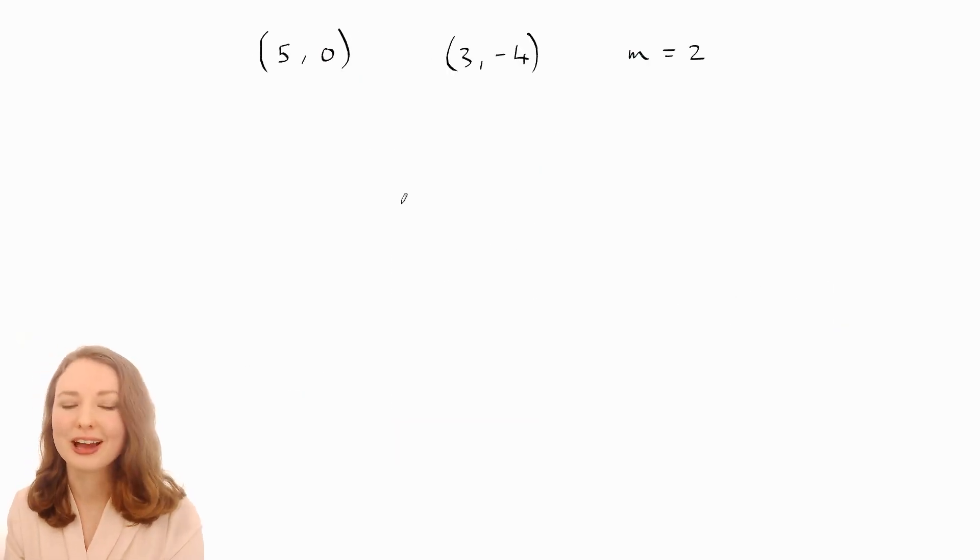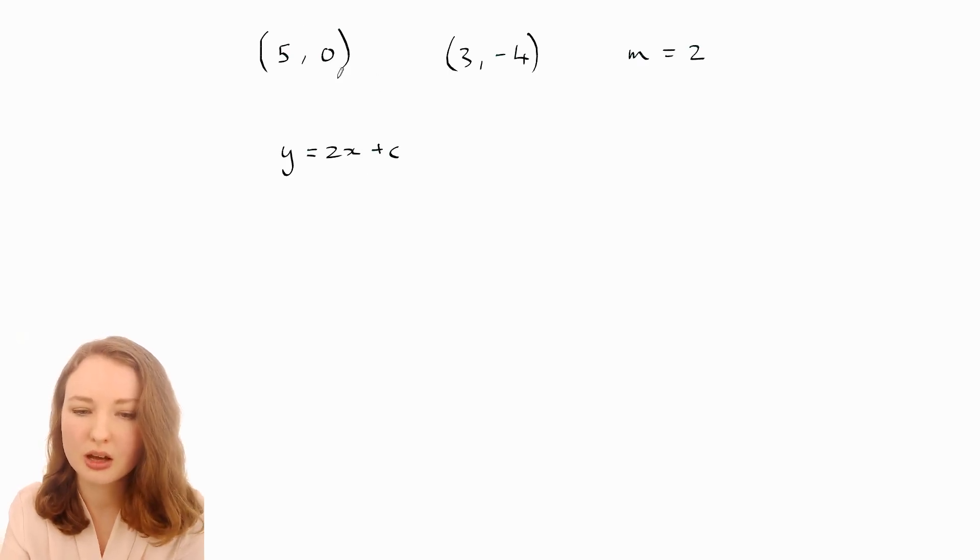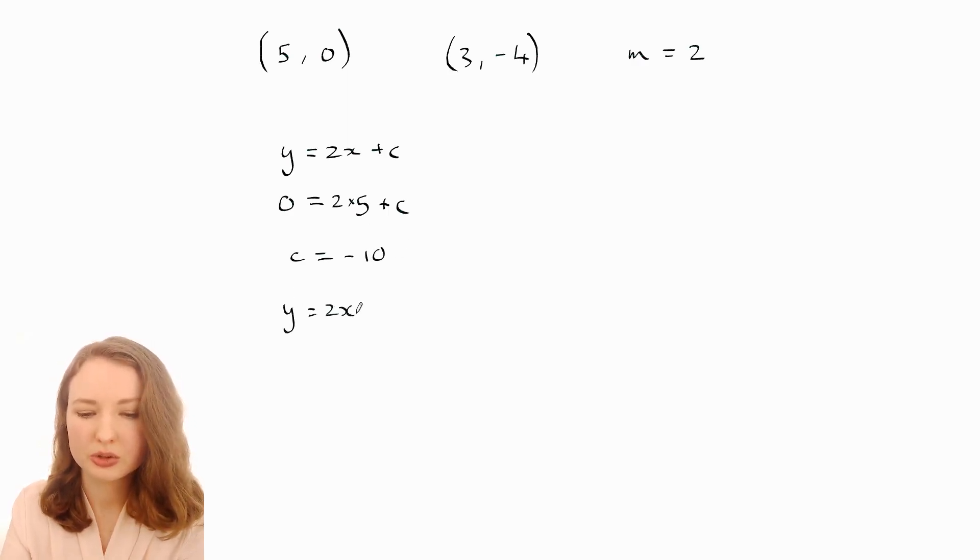Alright I'll go through an example so you can see how to apply this. So let's say we're trying to work out the equation of the straight line which passes through the points (5, 0) and (3, -4) and let's say we've already worked out that the slope is 2. Again go to my previous video if you've forgotten how to do that. So I'll start with my favorite method which is to say so far we know that y equals 2x plus c because we know that m is 2 and then we can sub one of these into here. So I might pick the (5, 0) because that's gonna be easiest so that'll give us 0 equals 2 times 5 plus c and then solve that for c that'll give you c equals -10. So that's your y-intercept and then if you were asked to find the equation you would say y equals 2x - 10.